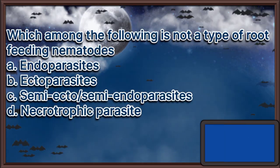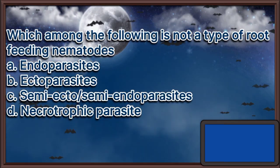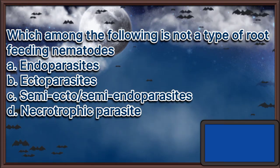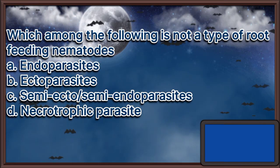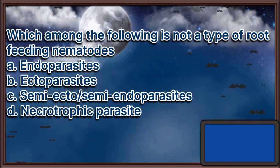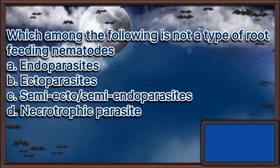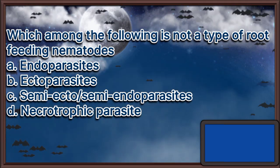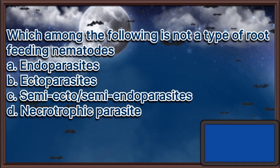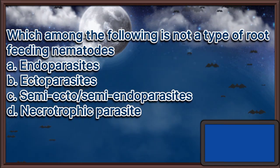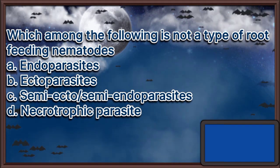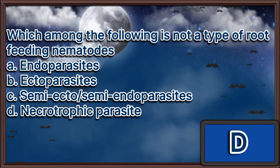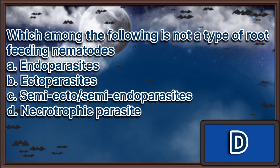Which among the following is not a type of root-feeding nematodes? A. Endoparasites, B. Ectoparasites, C. Semi-ecto or semi-endoparasites, D. Necrotrophic parasite. The answer is letter D.